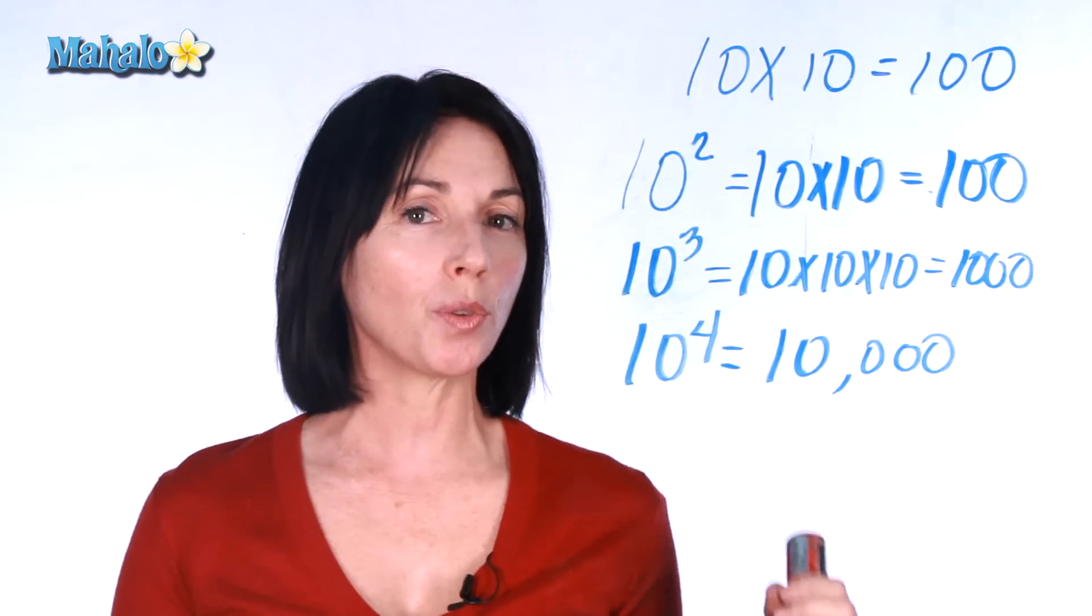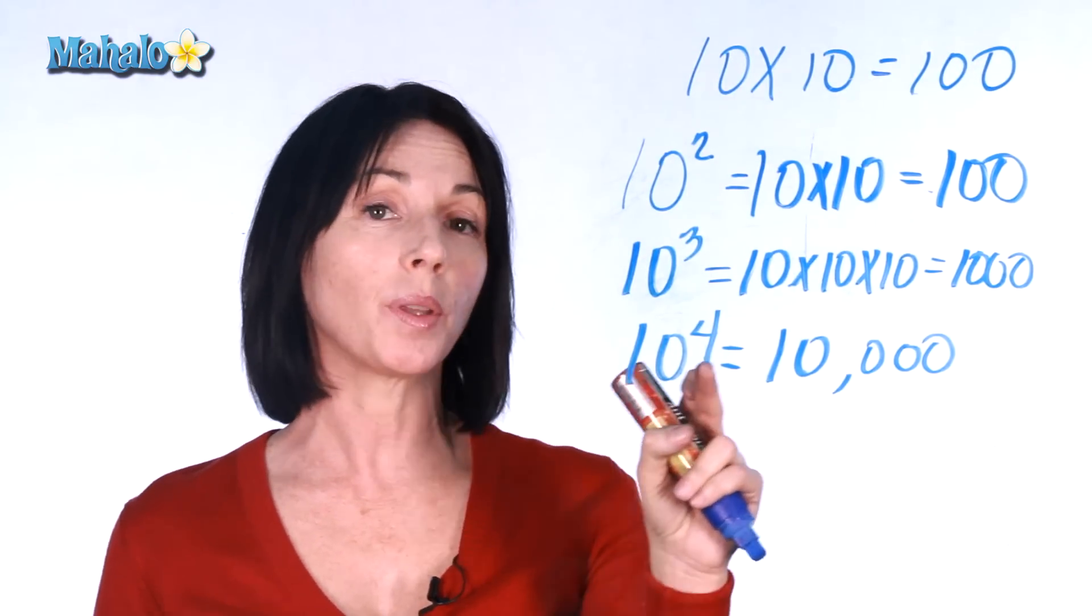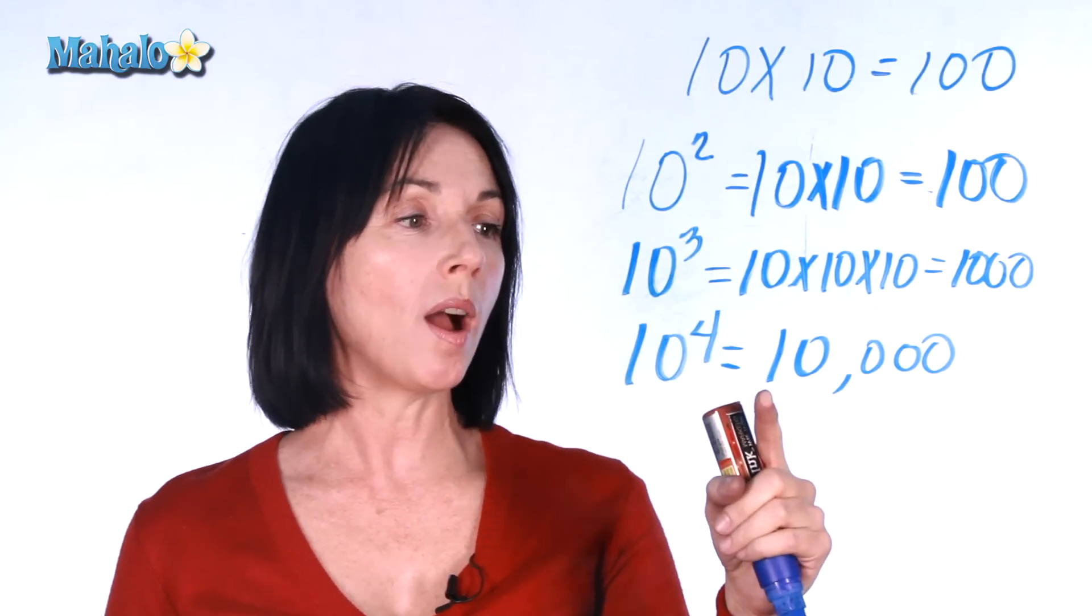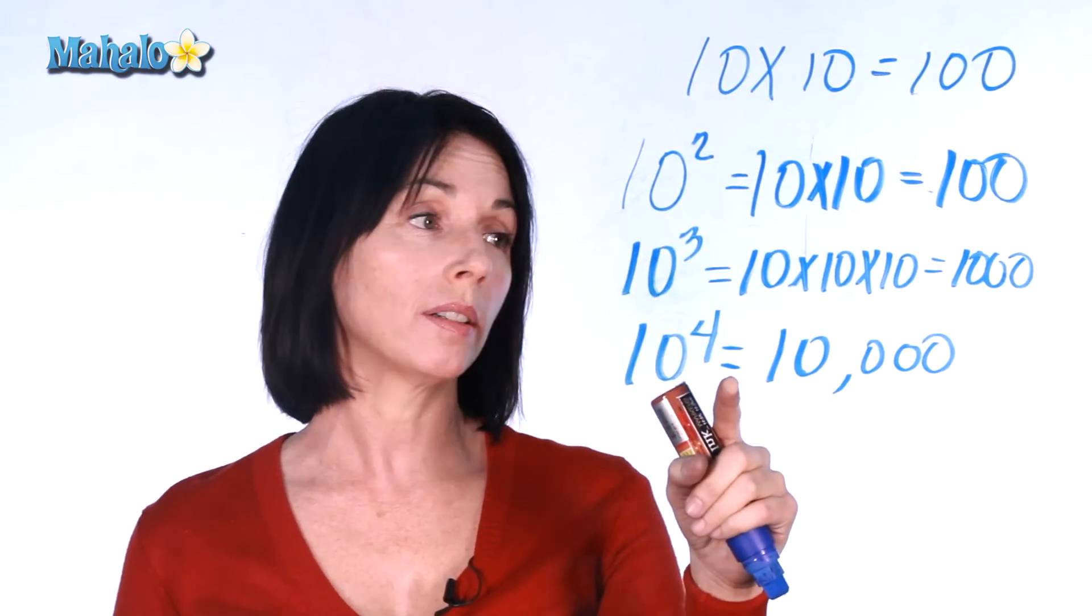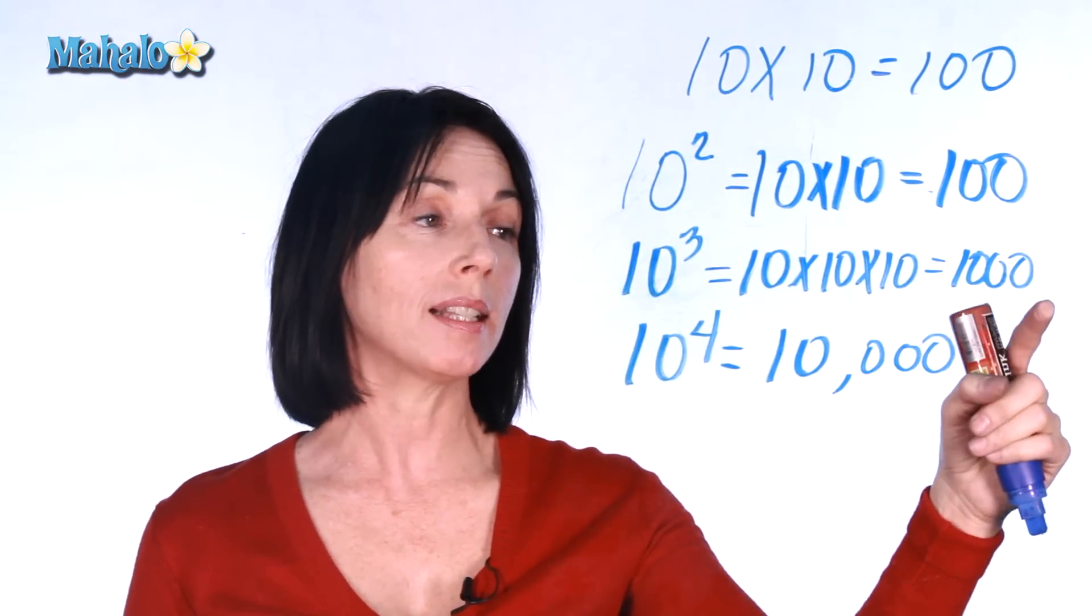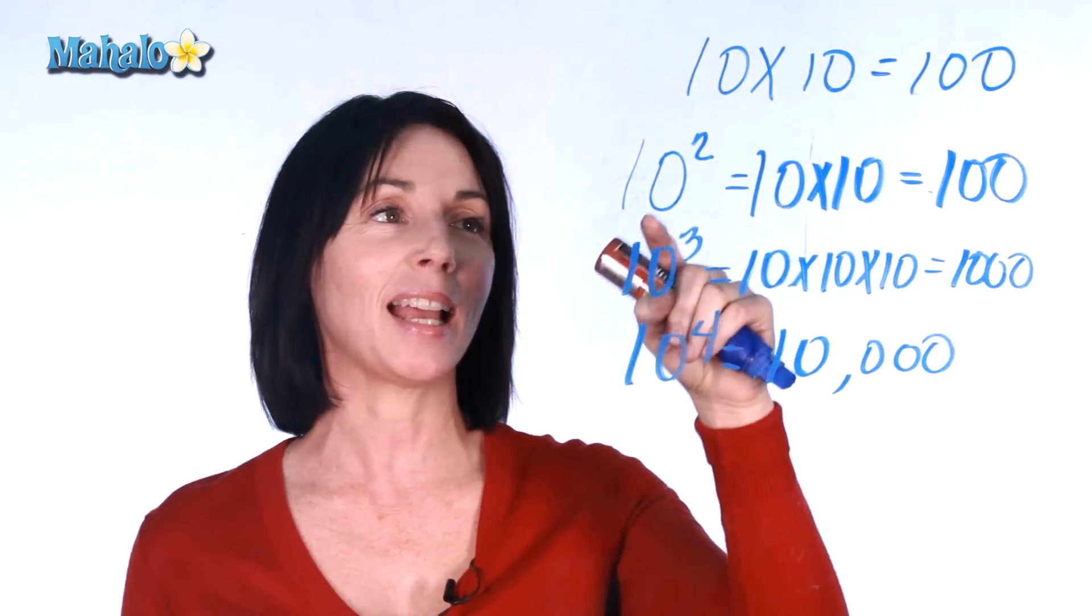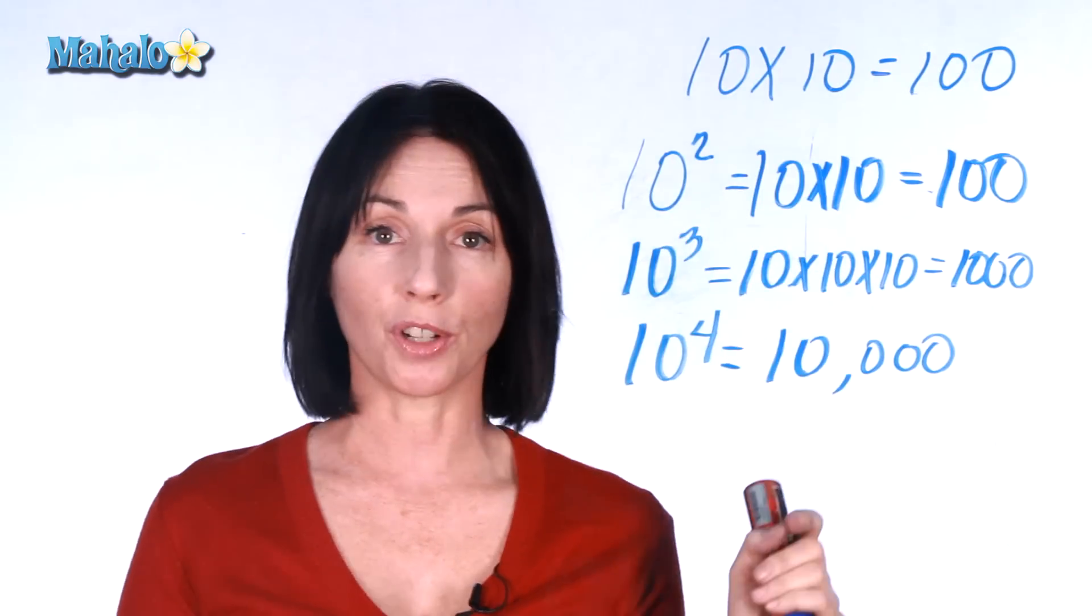So there's a pretty straightforward way to go from this number to writing it as 10 with an exponent, and that's just counting the zeros. So if you have a 1 with four zeros, that's equal to 10 to the power of 4. If you have a 1 with three zeros, that's 10 to the power of 3. A 1 with two zeros is 10 to the power of 2. So however many zeros you have, that's what your exponent will be.